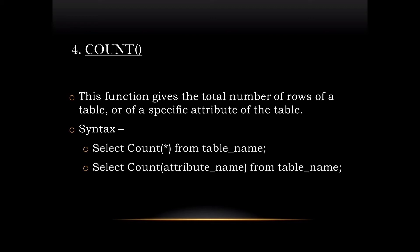In case of the second syntax, the function returns the number of rows of a specific attribute having non-null values. Except count star, all other aggregate functions ignore null values. Remember that null and zero are not the same thing — zero will be considered as a value in all the aggregate functions.